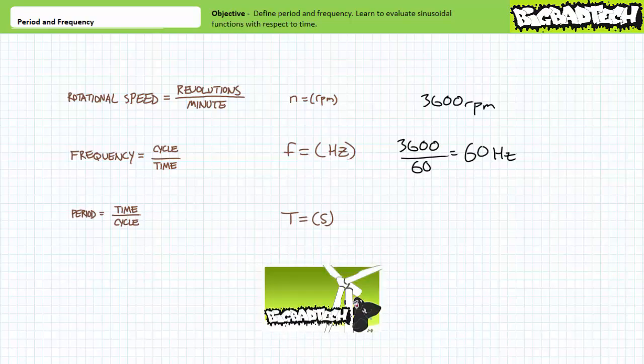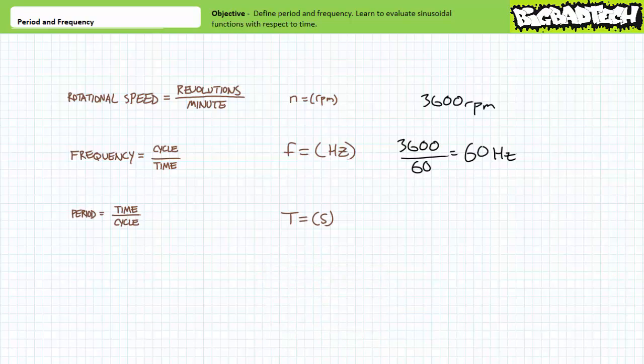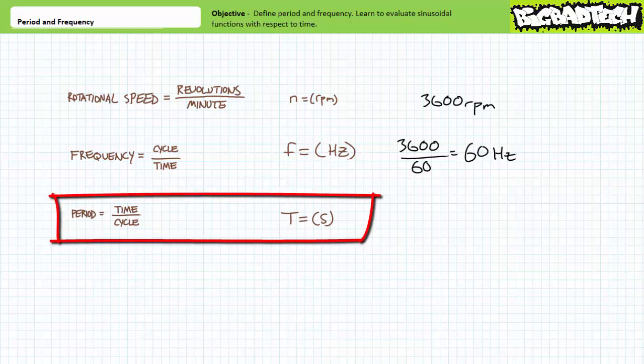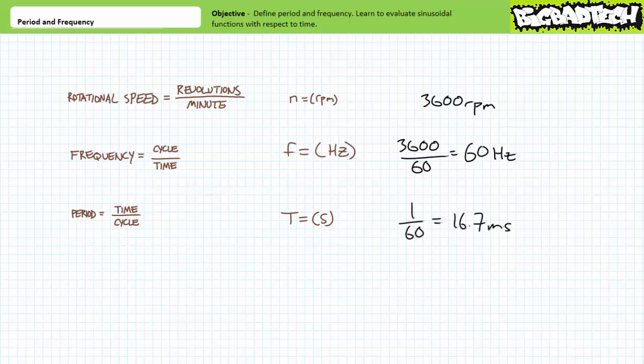As we'll learn in later lectures, generators can be driven at different rotational speeds and still output a frequency of 60 Hertz if we increase or decrease the number of magnetic poles. However, for this simple example, let's assume a one-to-one correspondence such that one full revolution of the generator rotor results in one full positive-to-negative-to-back-again cycle of the voltage waveform. Period, symbolized by capital T, is the time per single revolution. Given the above generator accomplishes 60 revolutions per second, simply inverting this frequency figure results in a period of 1/60th of a second, or approximately 16.7 milliseconds per revolution.